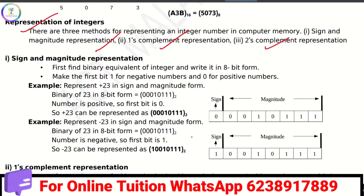What is sign and magnitude representation? Take a number and find its binary equivalent using the 8-bit formula. If it is a negative number, the first bit is 1; if it is a positive number, the first bit is 0. For example, for positive 23, we use the sign and magnitude formula with its binary formula.